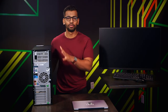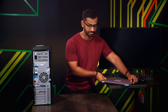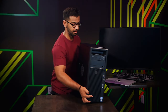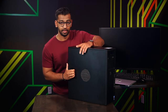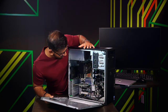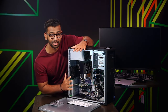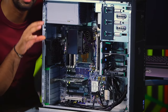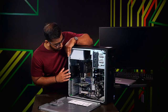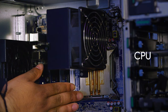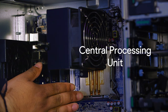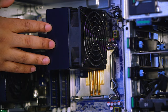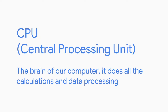This is my favorite part — let's open up this desktop and take a deeper look. It looks pretty complicated, but that's okay. Let's start with a quick tour, then we'll dive deeper into each of these parts in the next lesson. Right here, this component is a CPU, or Central Processing Unit, which is covered by this heatsink. You can think of the CPU as the brain of our computer. The CPU does all the calculations and data processing.